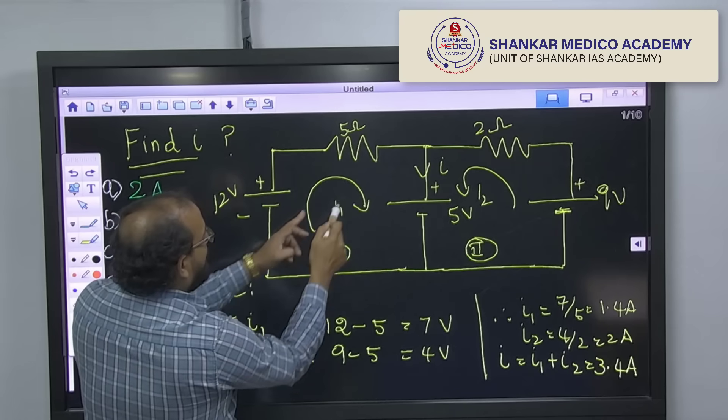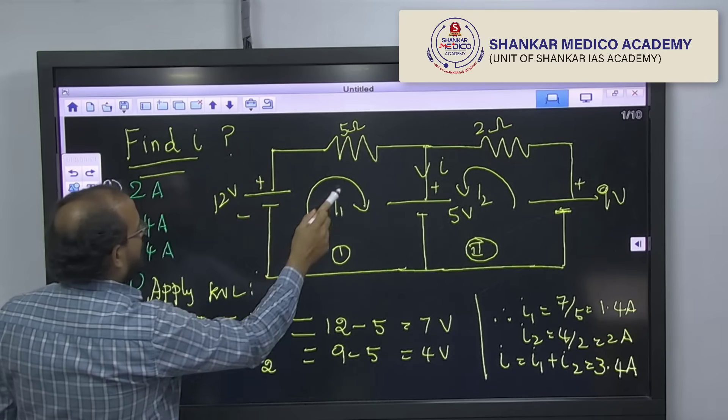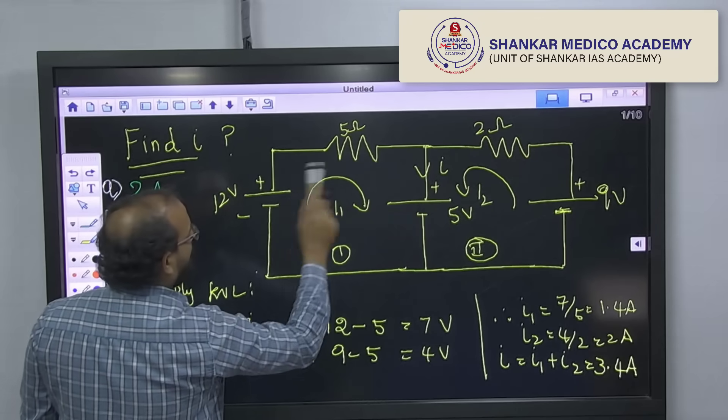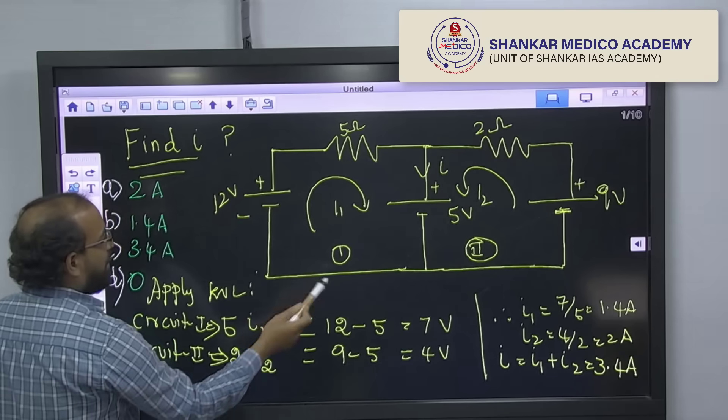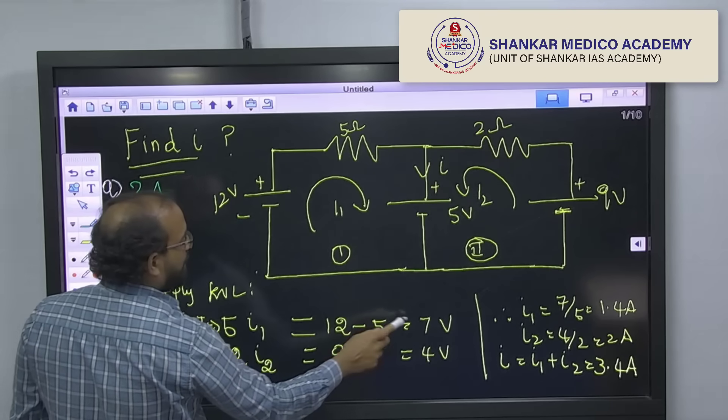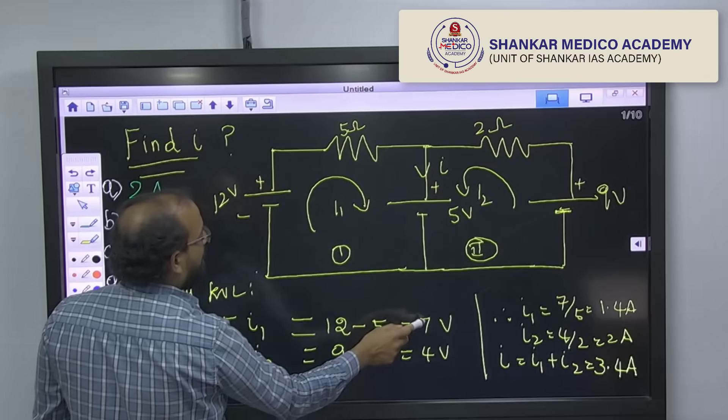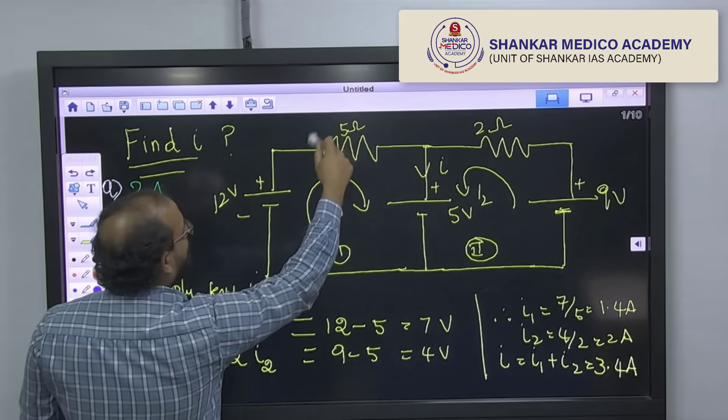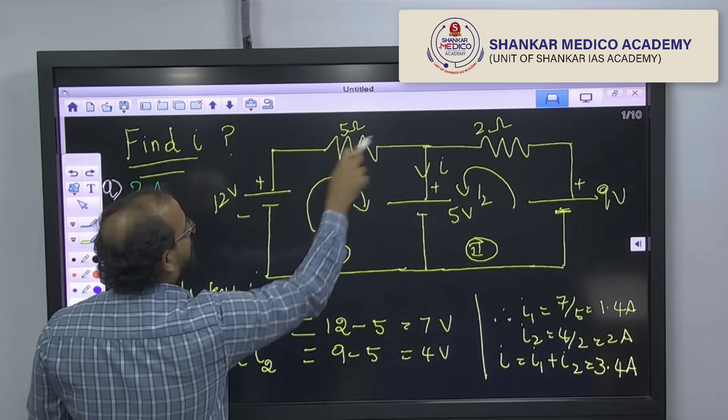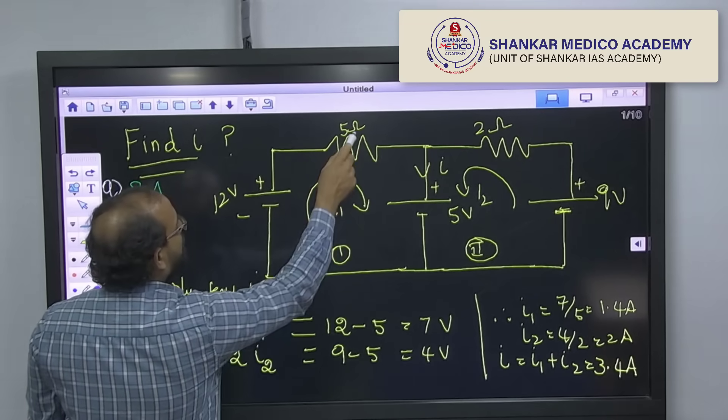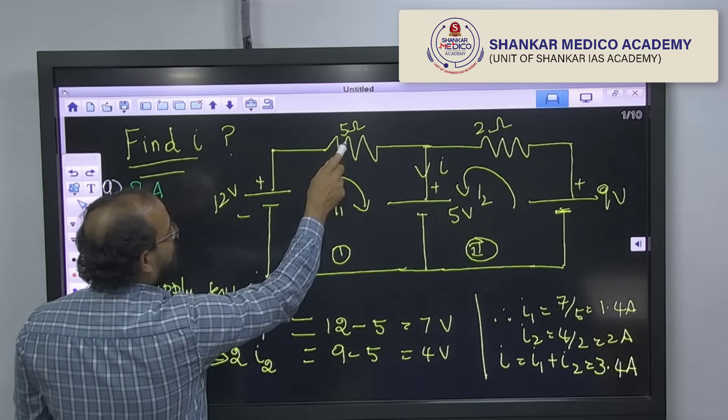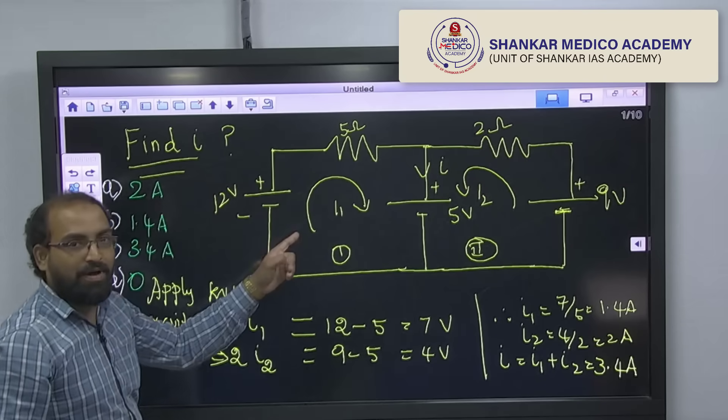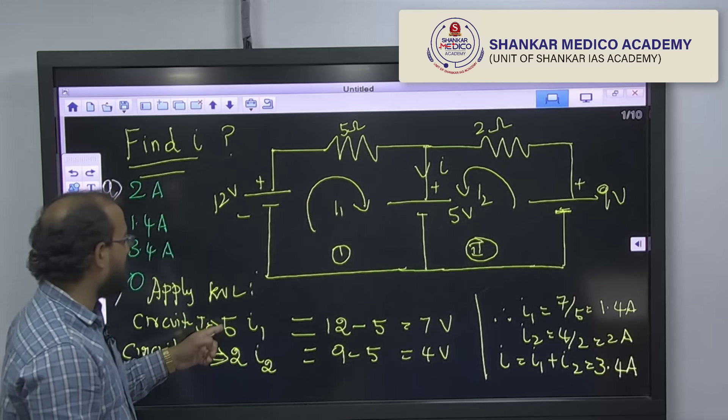When you apply Kirchhoff voltage law in loop 1, you can see that the voltage supply is 12 volt and 5 volt. Both are opposite. That means polarity is opposite, 12 minus 5, the total voltage here is 7 volt, that is supplying voltage. And the consuming voltage or voltage drop across this resistor, voltage according to Ohm's law, I into R. So, we can consider this current in this loop as I1. So, this voltage is 5 I1.